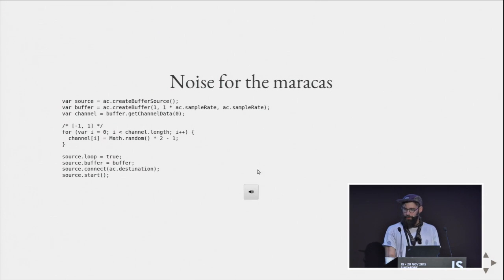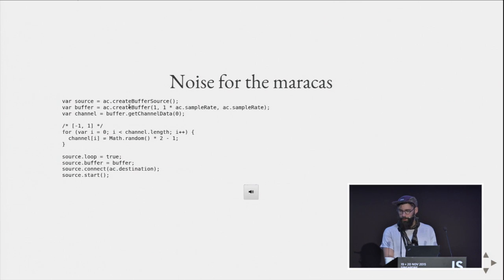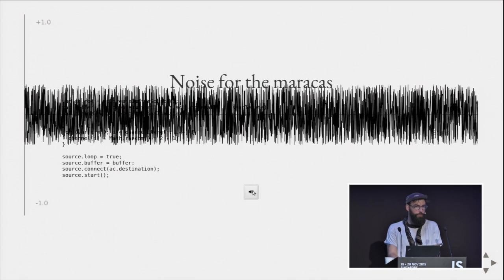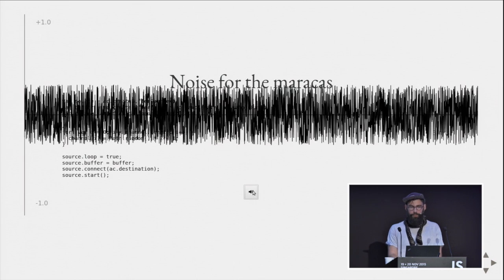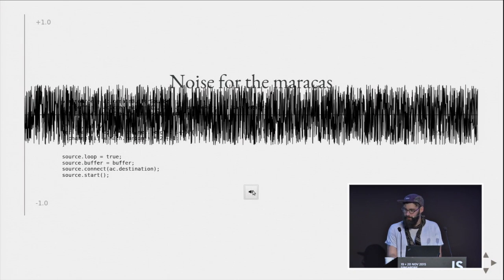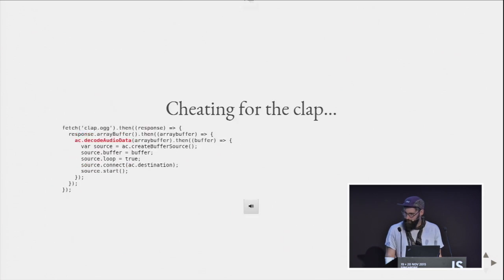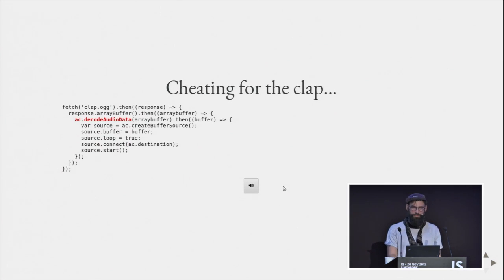We create a buffer and fill it with random noise using Math.random — values between minus one and one. That's just noise, and it's going to be very useful for making our maracas sound. For the clap, I didn't feel like synthesizing it because it's pretty hard.